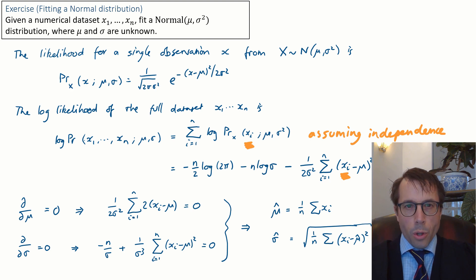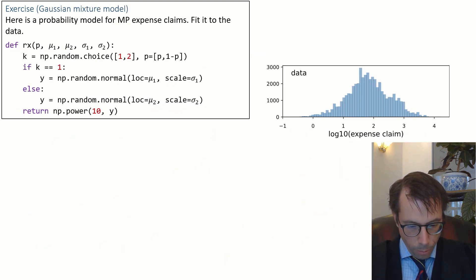Okay, now let's go on to a more complicated example. This is the example we looked at in the very first video of this course. Here is a probability model for MP expense claims. Fit it to the data. The first thing I'm going to do is, I'm not going to fit the claim data. I'm going to fit the log claim data. It's what I'm plotting in the histogram, it's how my code generates its output, and it just makes the maths easier.